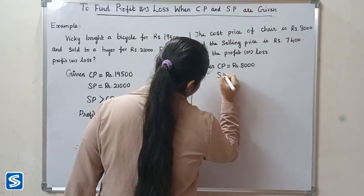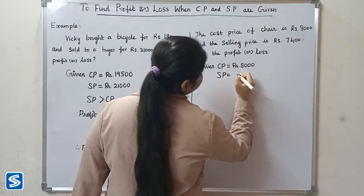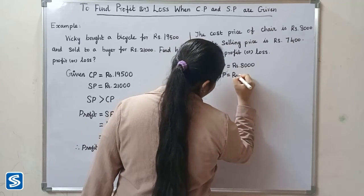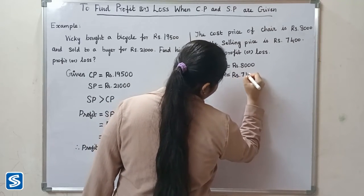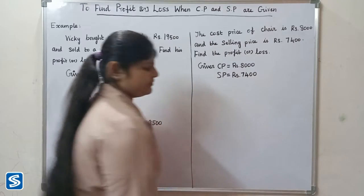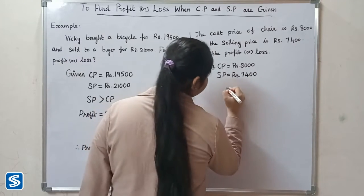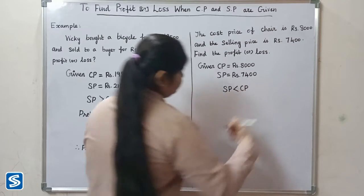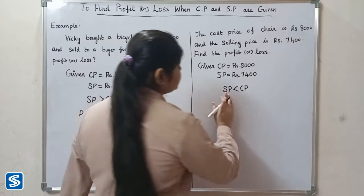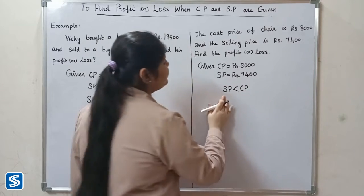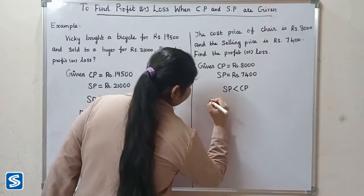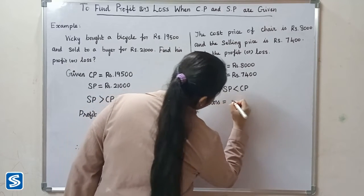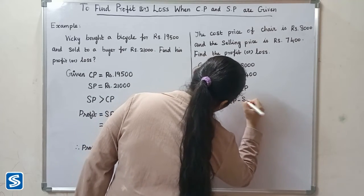The selling price is rupees 7,400. Here selling price is less than cost price, so we have a loss. We already know that loss is equal to cost price minus selling price.